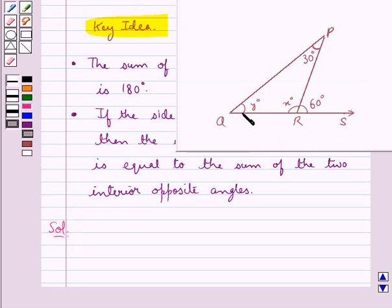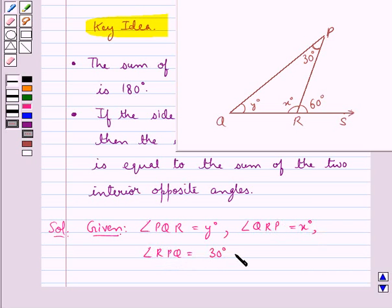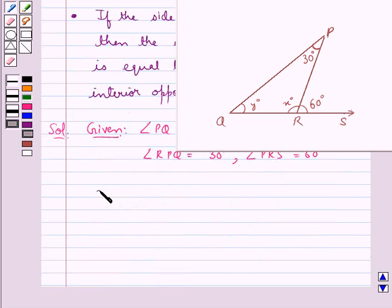This is the figure given to us. Now let's see what all we have in this figure. Here we are given that angle PQR is equal to y degrees, angle QRP is equal to x degrees, angle RPQ is equal to 30 degrees, and angle PRS is equal to 60 degrees. And we need to find the values for x and y.